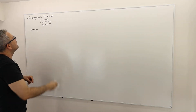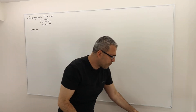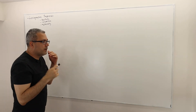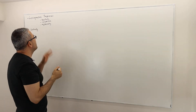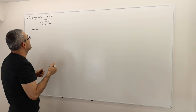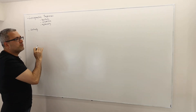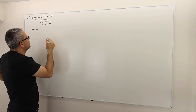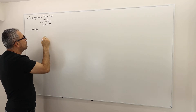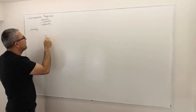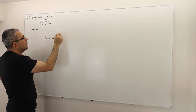I'd like to talk about lexicographic preferences. So the definition - if you remember, I defined it in the lecture videos. In this simpler example, I am going to assume that the set of alternatives are basically the unit square.